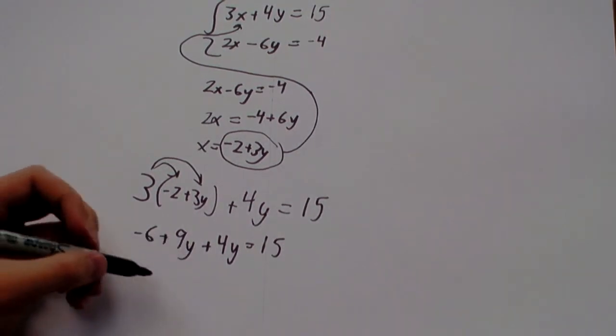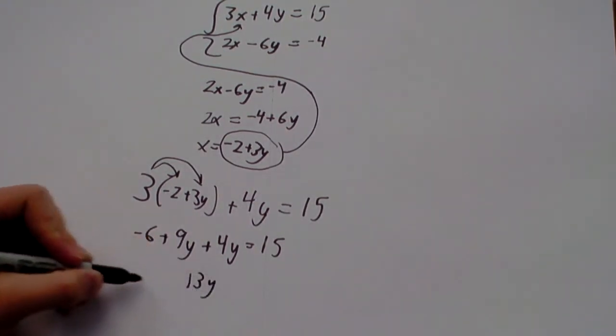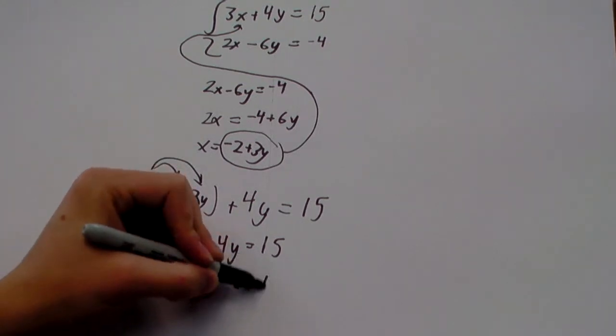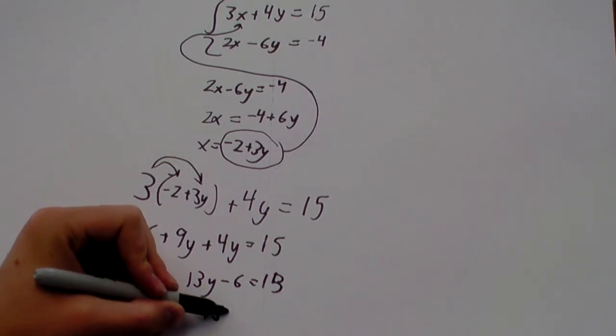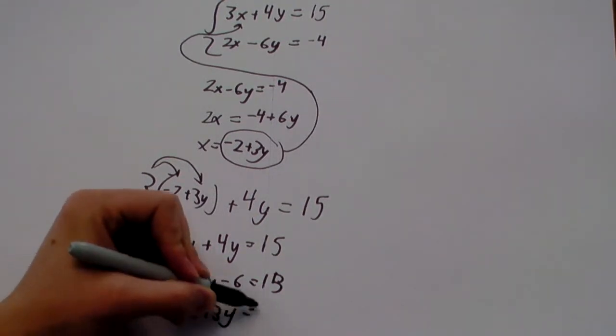Now, 9 and 4 are 13, of course. So, we've got 13y minus 6 equals 15. And add 6 to both sides. We get 13y equals 21.